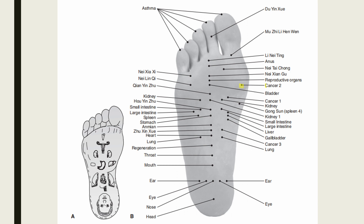The Cancer 2 point is located 0.1 unit distal to the bladder point and 2 units medial to the midline, or 8.1 units from the heel and 2 units medial to the midline. Indications include internal organ tumors below the umbilicus. Nei Lin Qi is located opposite Gallbladder 41 (Zulinqi) on the plantar surface of the foot. Indications include migraine headache, hypochondriac area pain, eye problems, tinnitus, and fever.